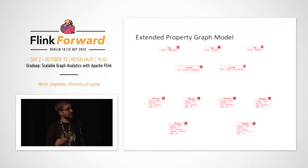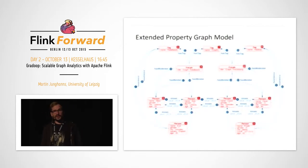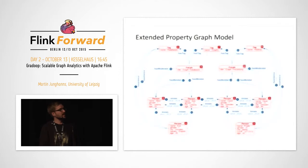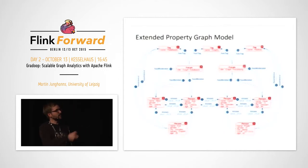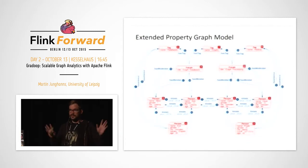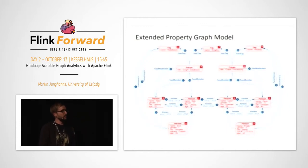The second first-class citizen in our data model are edges. Edges are binary and directed, meaning they connect at most two vertices. Each edge has a unique identifier, a label — for example, a person is interested in a tag, a forum has a tag, or a forum has moderators and members — and edges can also have properties like the since property. This is essentially the property graph model; it exists for a while and is integrated in, for example, Neo4j or OrientDB.